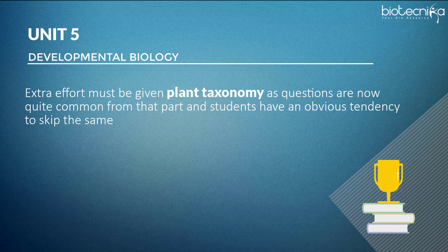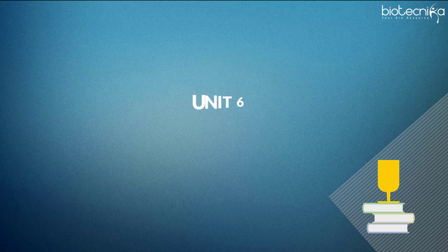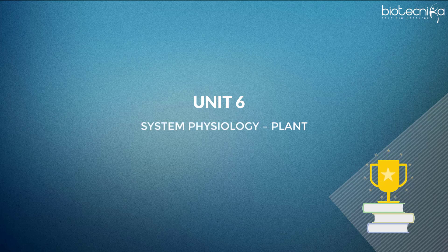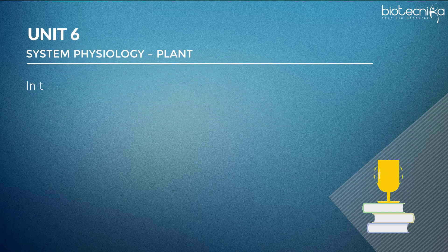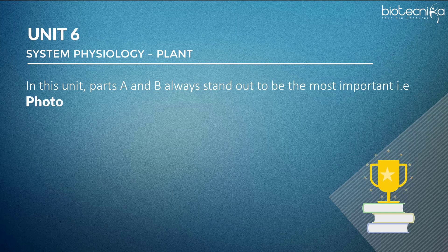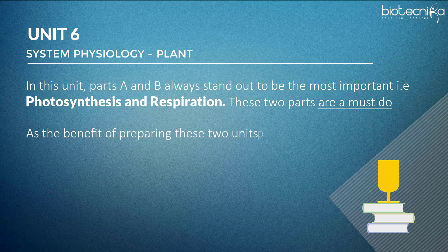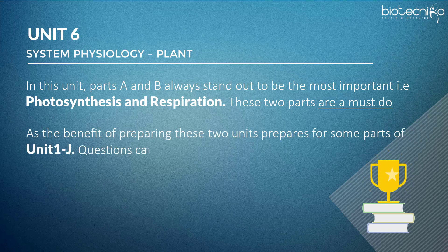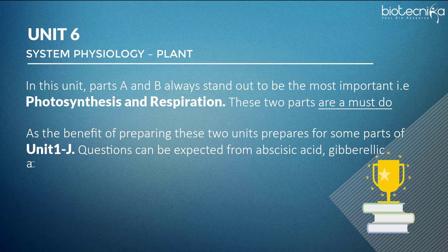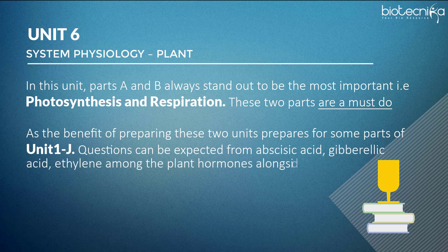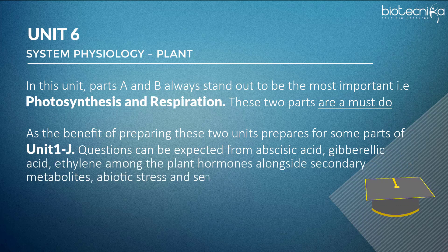Extra effort must be given to plant taxonomy, as questions are now quite common from that part and students have an obvious tendency to skip it. Unit 6 — System Physiology Plant: Parts A and B always stand out as the most important — that is photosynthesis and respiration. These two parts are must-do, as preparing them also covers some parts of Unit 1J.